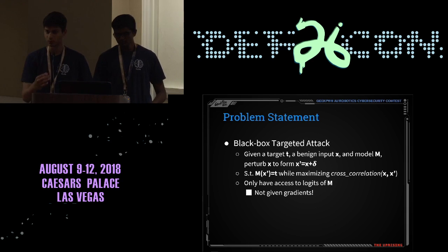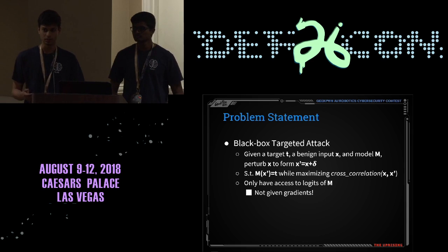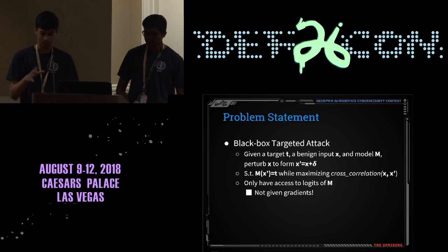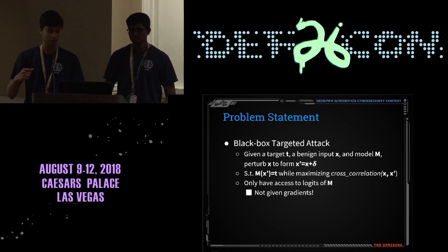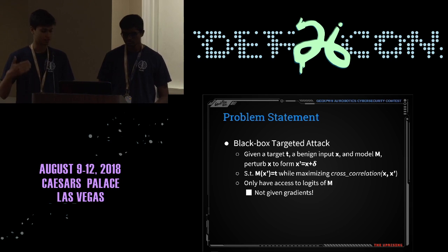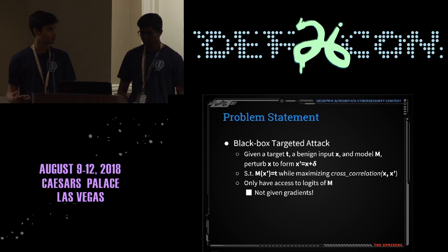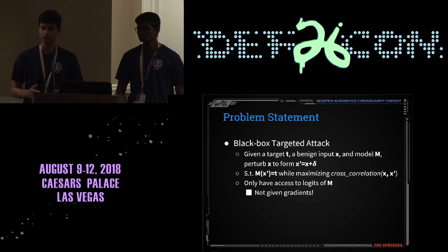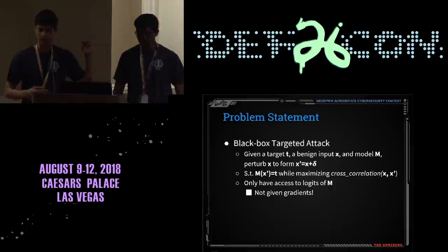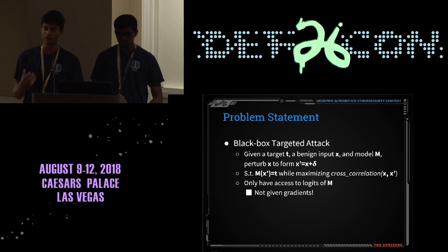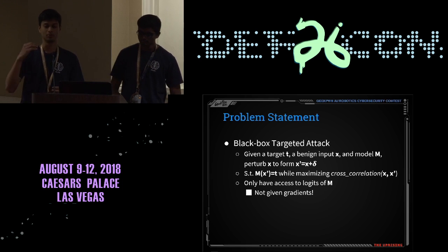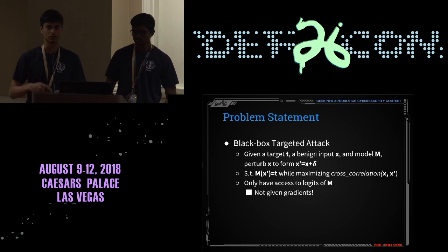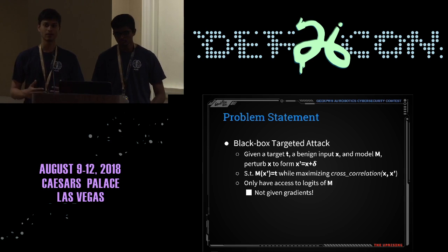More formally, we're doing a black box targeted attack for audio systems. Given a target t (the output translation we want the model to guess, e.g., 'OkGoogleBrowseToEvil.com') and a benign input x, we want to perturb x with a small delta to create x prime such that the model m classifies m(x') = t. We also want to maximize the cross-correlation between x and x prime — cross-correlation being a measure of similarity between the two audio files. Since this is a black box attack, we only have access to the output logits, not gradients or model parameters.